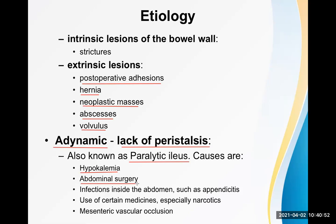Infection — either inside the abdomen or in a nearby organ — is another cause. Conditions like appendicitis, cholecystitis, and pancreatitis can cause the nearby loop of bowel to develop paralytic ileus. This is referred to as the sentinel loop or sentinel bowel — a feature of paralytic ileus resulting from nearby inflammation.